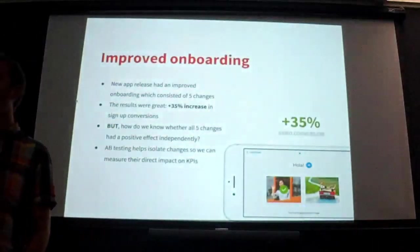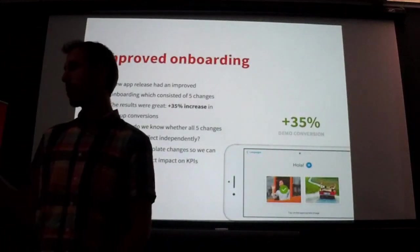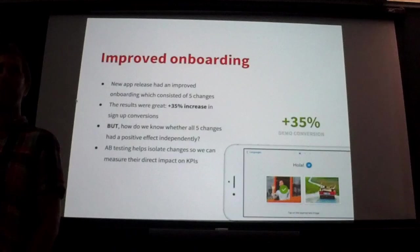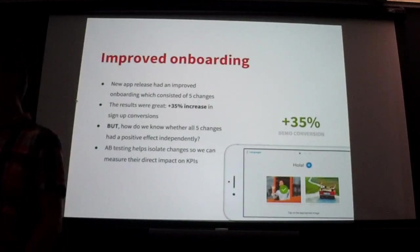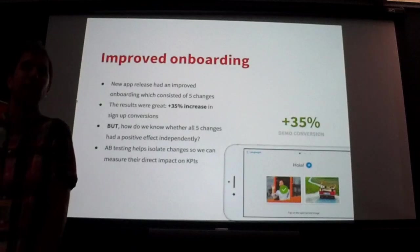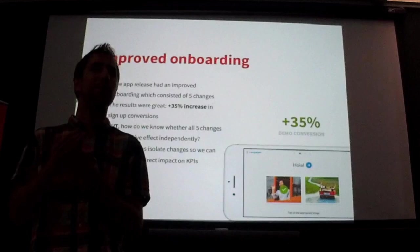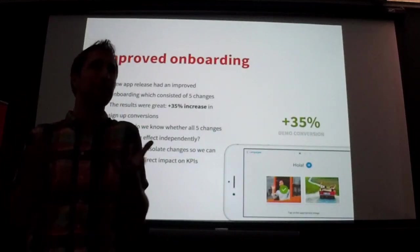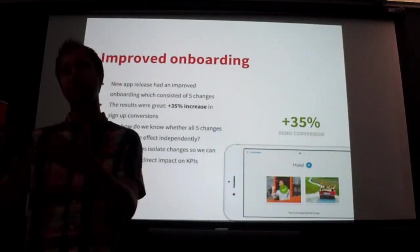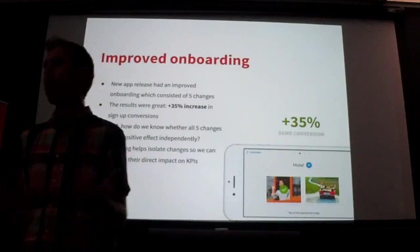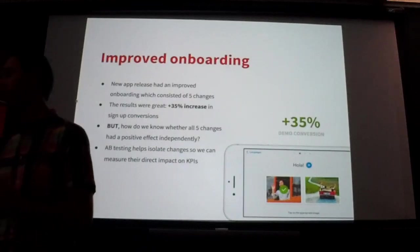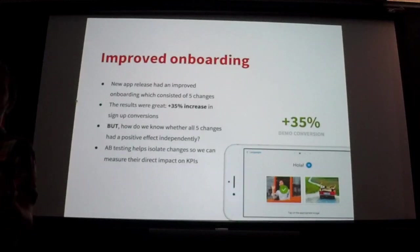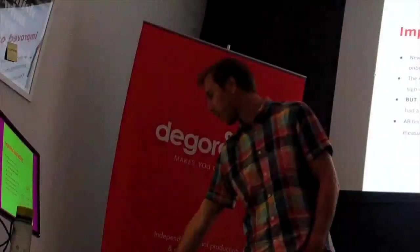Another example briefly touching on A/B testing — a positive one. We were improving onboarding in our app and saw really positive results. We made five changes in the UI during onboarding. But we always wonder now — we didn't do an A/B test — whether all five changes had a positive effect independently. Maybe one of those five changes actually degraded the experience, and we'll never know. We won't do an A/B test again. There are some tools now where you can do A/B testing quite lightweight, especially for UI changes.